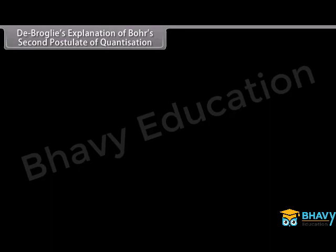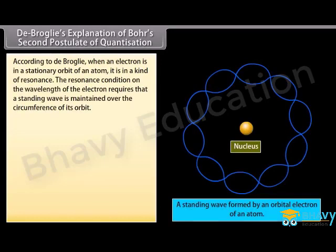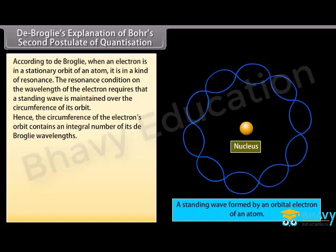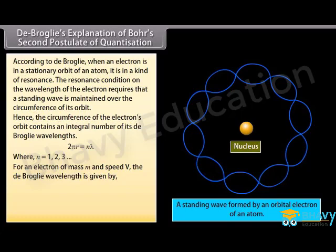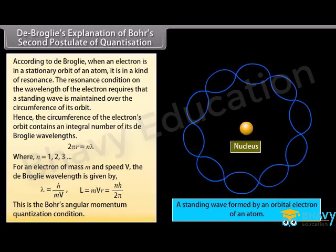De Broglie's explanation of Bohr's second postulate of quantization: De Broglie explained the quantization condition on angular momentum of an orbiting electron. According to De Broglie, when an electron is in a stationary orbit of an atom, it is in a kind of resonance. The resonance condition requires that a standing wave is maintained over the circumference of its orbit, so the circumference contains an integral number of De Broglie wavelengths: 2πr = nλ, where n = 1, 2, 3, ... For an electron of mass m and speed v, the De Broglie wavelength is h/mv. This gives mvr = nh/2π, which is Bohr's angular momentum quantization condition.